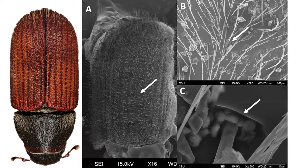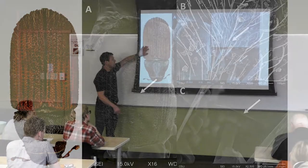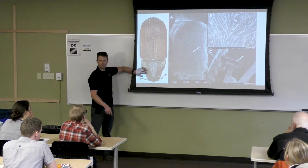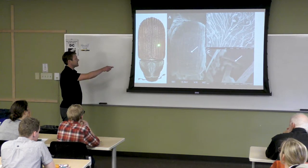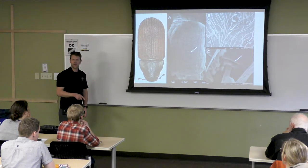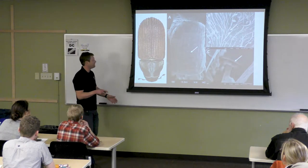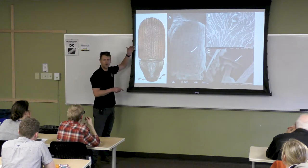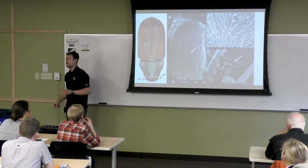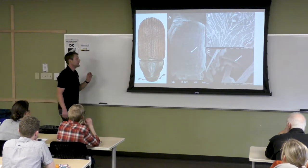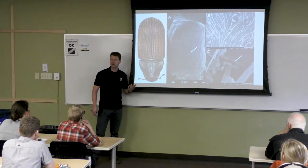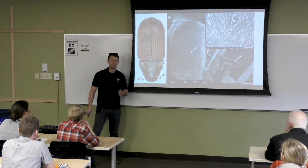Let me orient you through some scanning electron micrographs. Looking at the beetle, you can see little indentations up and down the wing casing — these are called striae, tiny impressions in the elytra. It's thought that this is where the fungi are carried on this particular species. At about 15x magnification, the striae look kind of washed out.